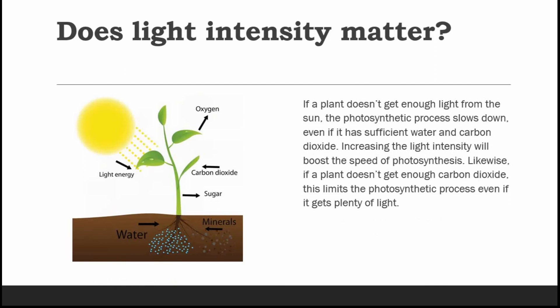Does light intensity matter for the growth of the plant? If a plant doesn't get enough light from the sun, the photosynthetic process slows down even if it has sufficient water and carbon dioxide. Increasing the light intensity will boost the speed of photosynthesis. Likewise, if a plant doesn't get enough CO2, this limits the process even if it gets plenty of light. So if you don't have enough light or enough CO2 in the poly house environment, the plant won't give you good growth.